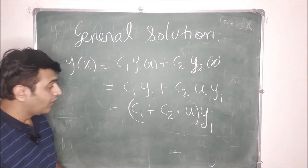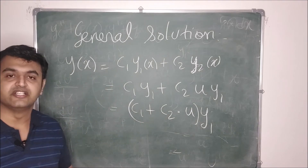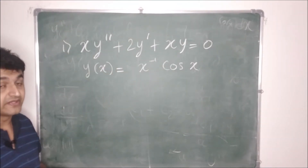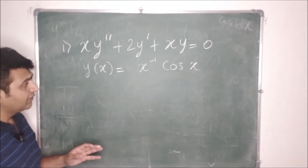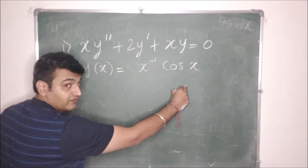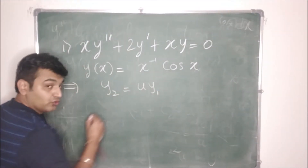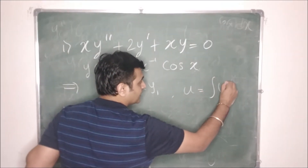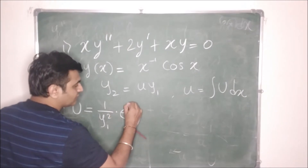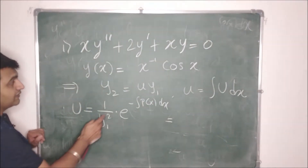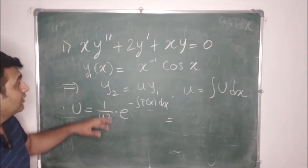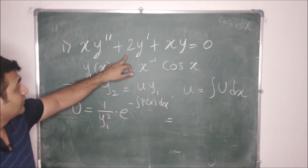Let's work through an example. We have a second-order linear homogeneous ODE with one solution y1 given. Using the reduction of order formula, y2 = u·y1 where U = (1/y1²)·e^(−∫p(x)dx). Be careful: the coefficient of y'' must be 1 before reading off p(x). After dividing through, p(x) = 2/x. So the formula gives U = (1/y1²)·e^(−∫2/x dx) = (1/y1²)·e^(−2 ln x) = (1/y1²)·x^(−2).